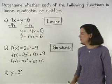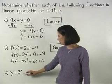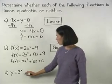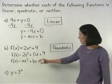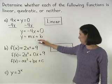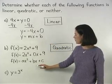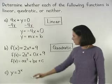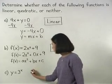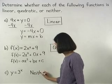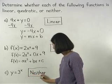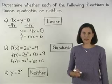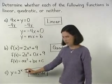In Part C, to determine whether the function y equals 3 to the x is linear, quadratic, or neither, notice that y equals 3 to the x cannot be written in the form y equals mx plus b, or the form f of x equals ax squared plus bx plus c. Therefore, this function is neither linear nor quadratic. Another way to tell is that the x in this function is an exponent.